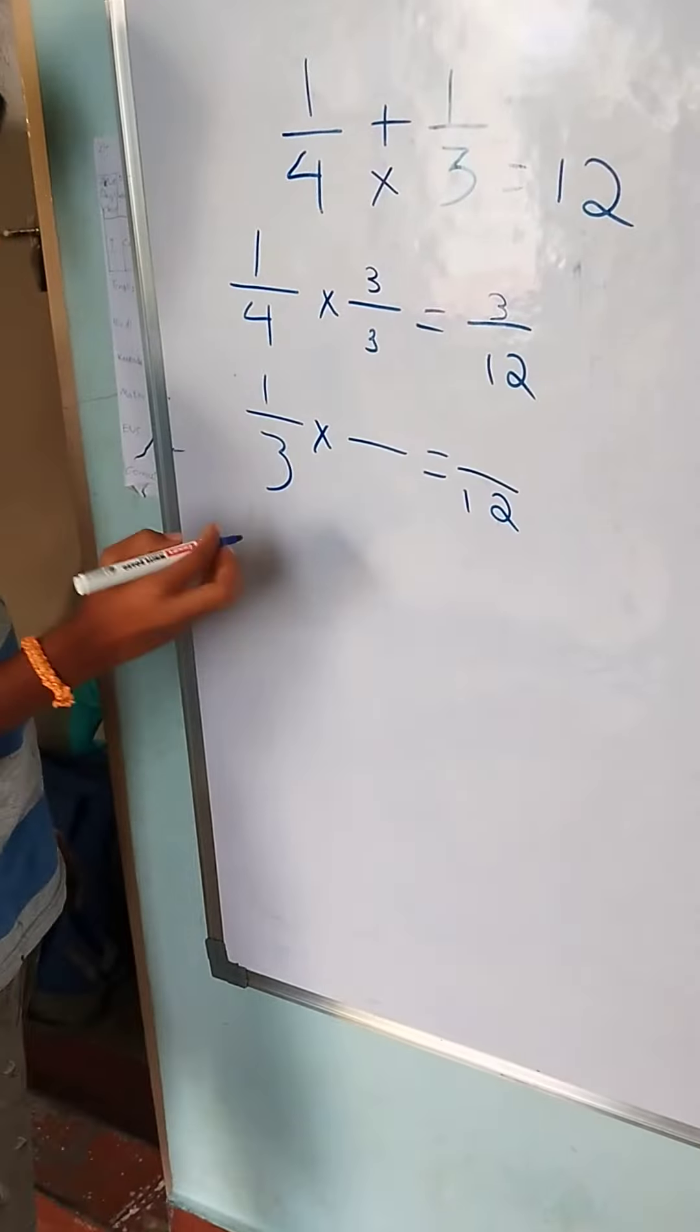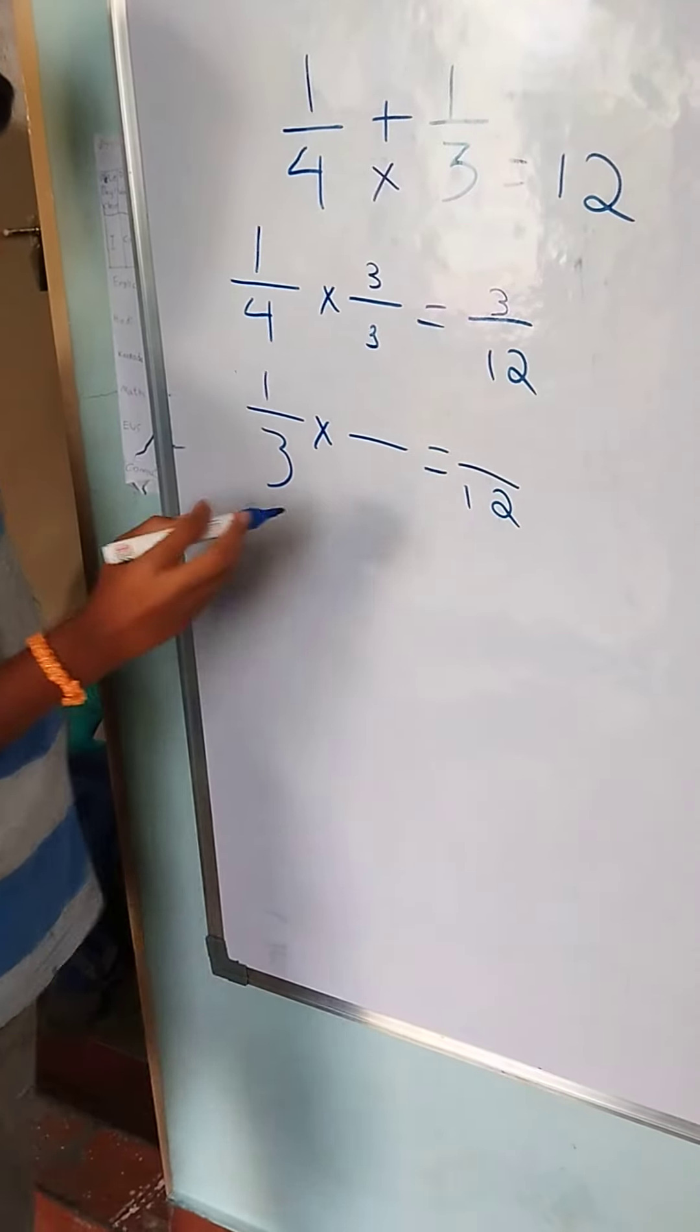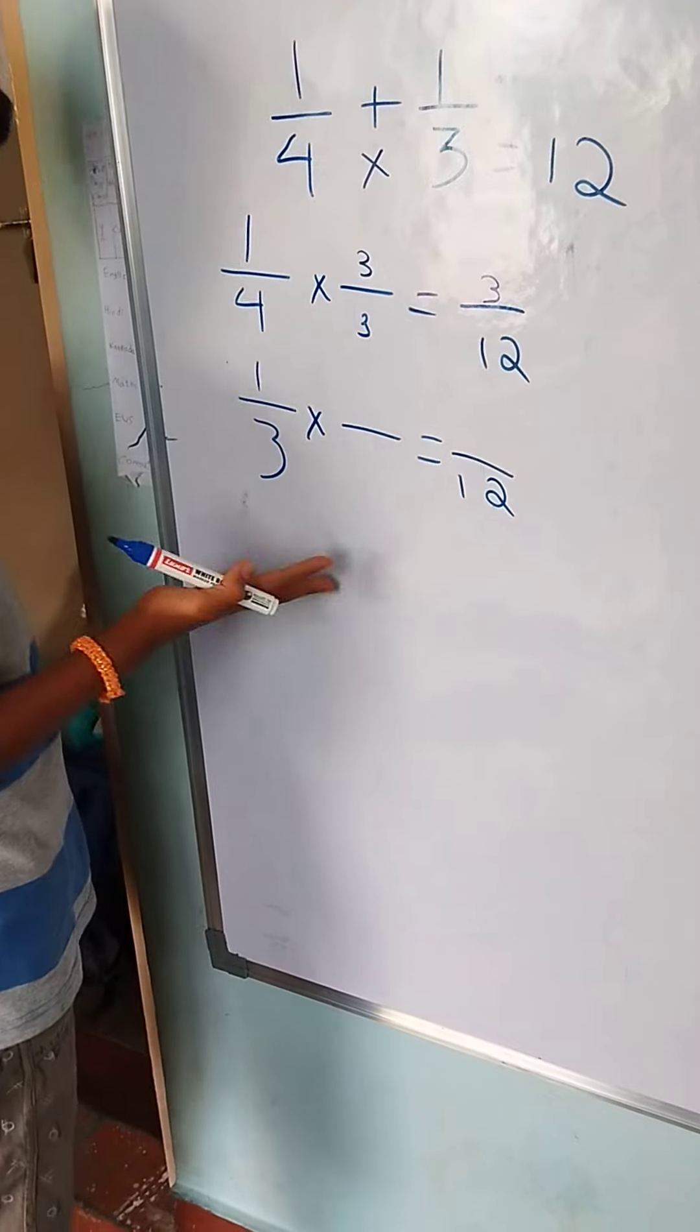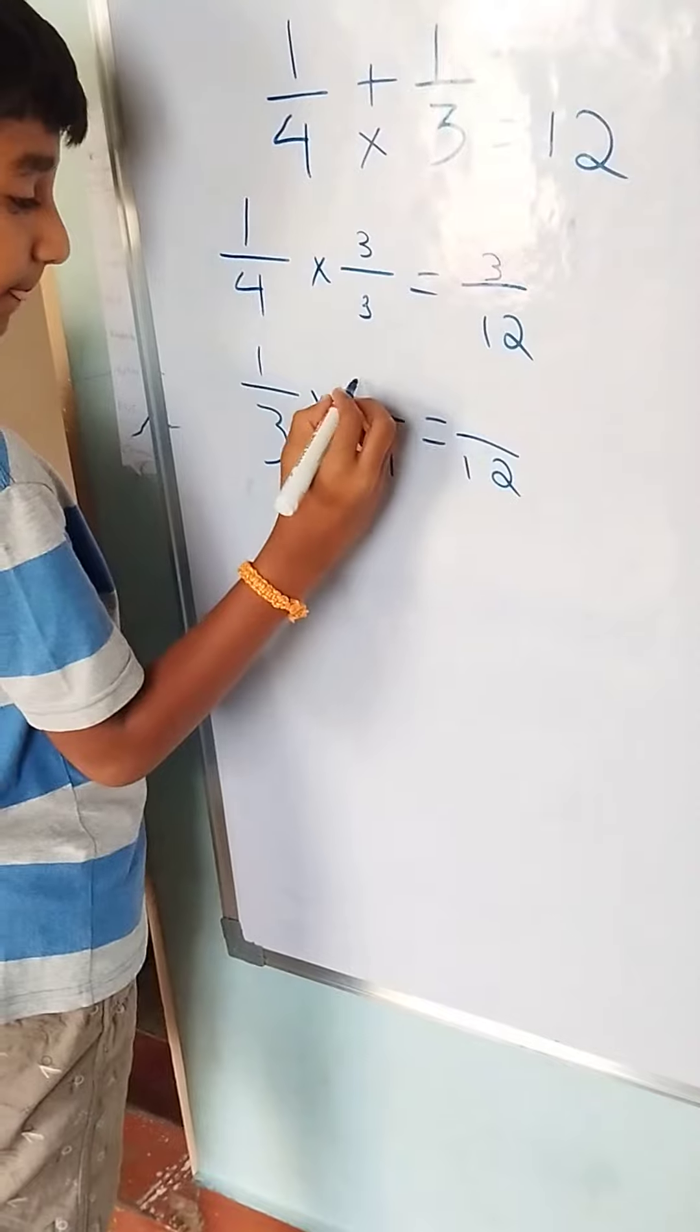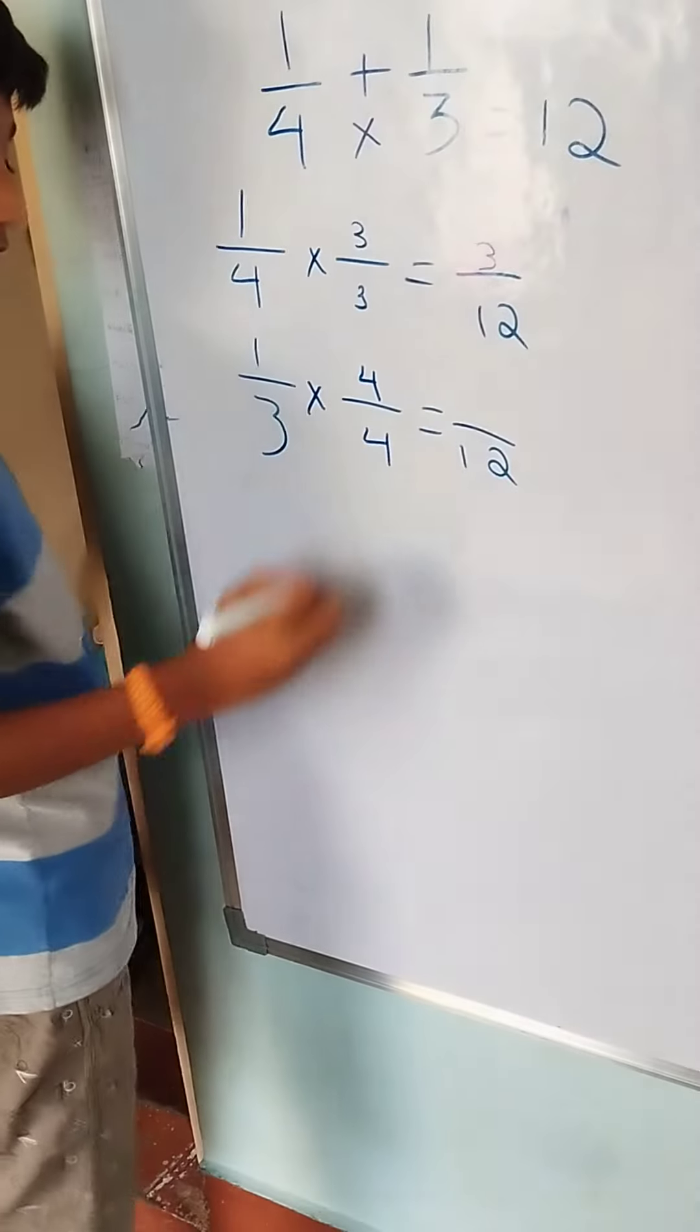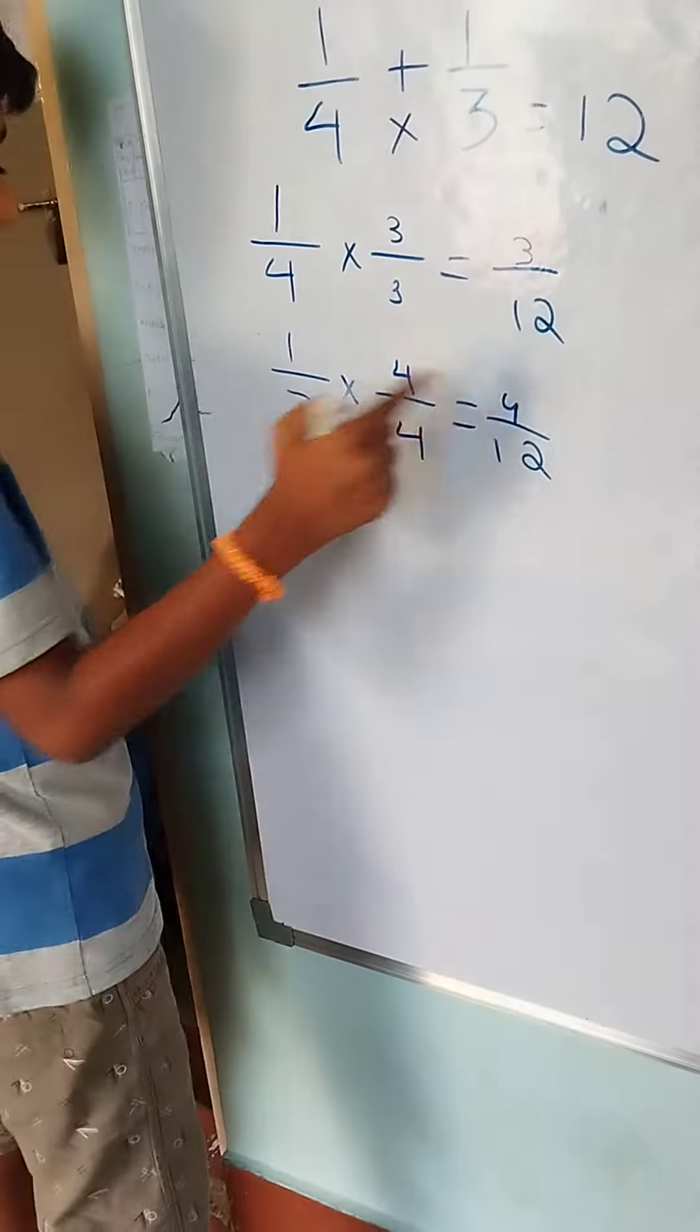Now we should check the tables if we do not know what comes over here. So 4 comes here and it should come here too. 4 over here comes here.